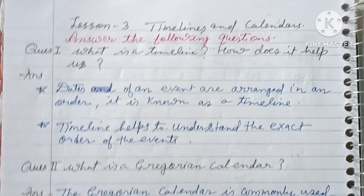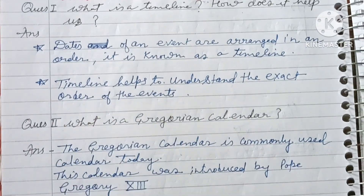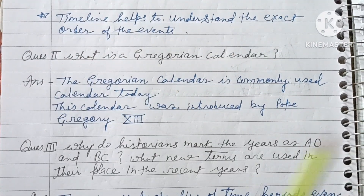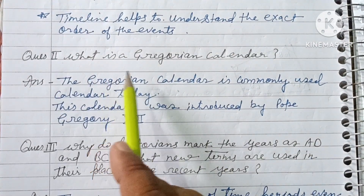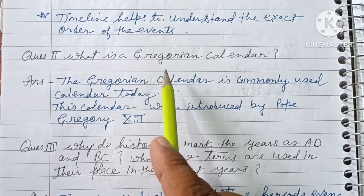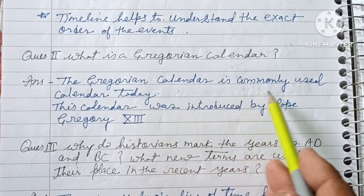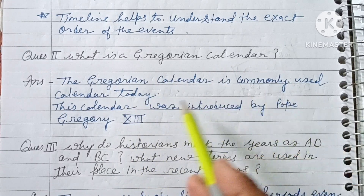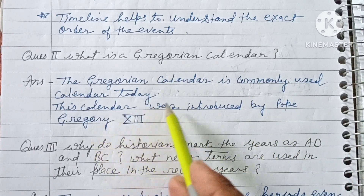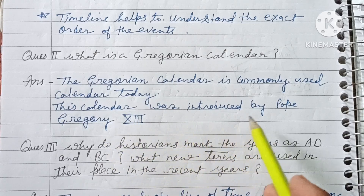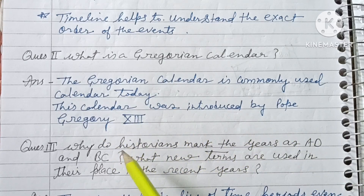Question 2: What is the Gregorian calendar? Answer: The Gregorian calendar is the commonly used calendar today. This calendar was introduced by Pope Gregory the 13th.